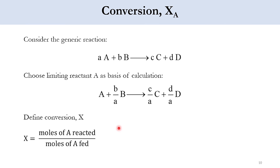We assume a generic reaction: a·A + b·B → c·C + d·D, where lowercase a, b, c, d are stoichiometric coefficients and uppercase A, B, C, D are the species. When we choose a limiting reactant, we make its stoichiometric coefficient equal to one by dividing through. For example, dividing by a gives: A + (b/a)·B → (c/a)·C + (d/a)·D. The limiting reactant is the basis of all calculations.